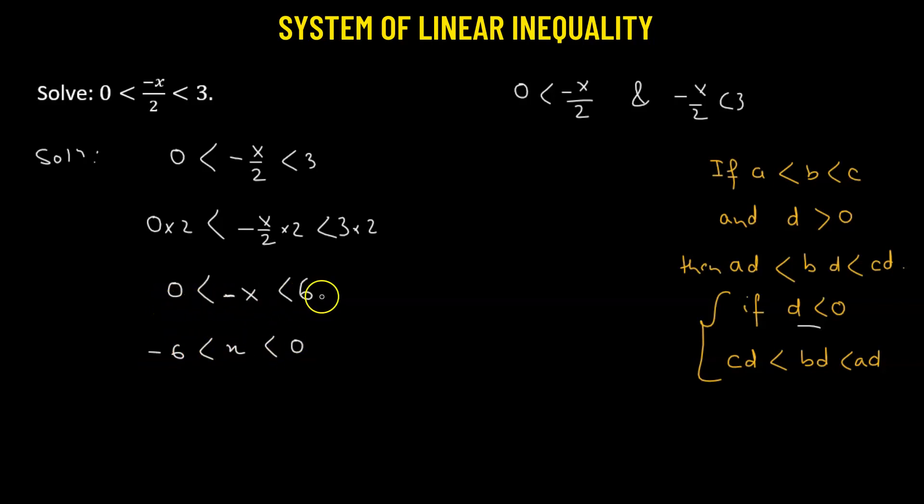We have multiplied throughout with negative 1, and rearranged it to write x lying between negative 6 and 0. Expressing this in interval form, our solution goes from negative 6 to 0, as an open interval because the endpoints are not part of the solution. This is the solution to the given system of linear inequalities.